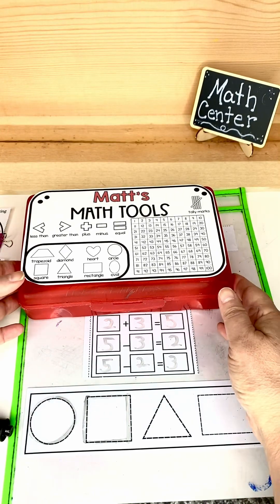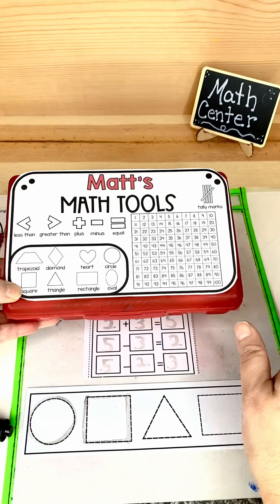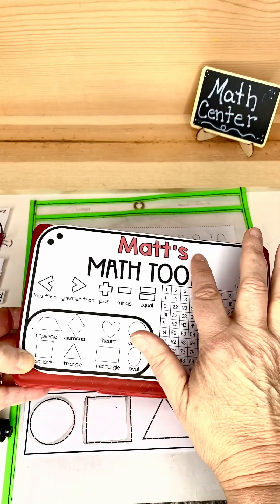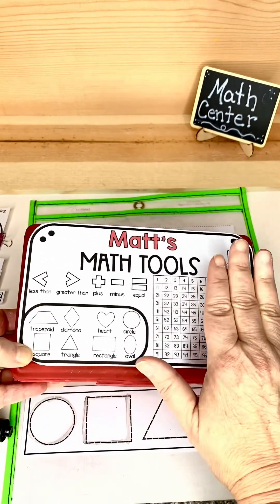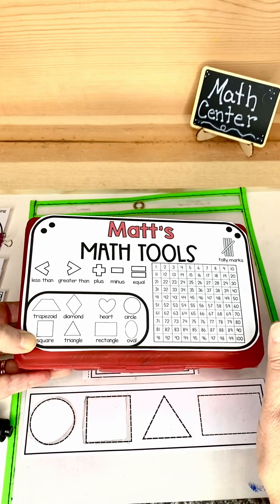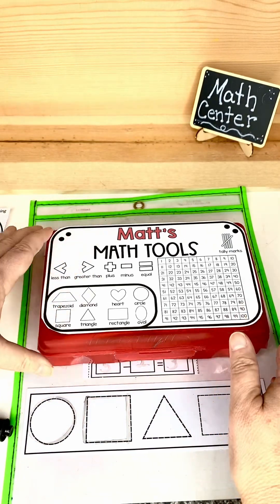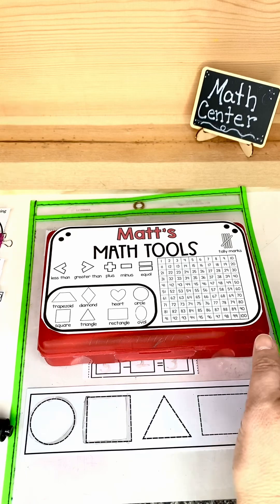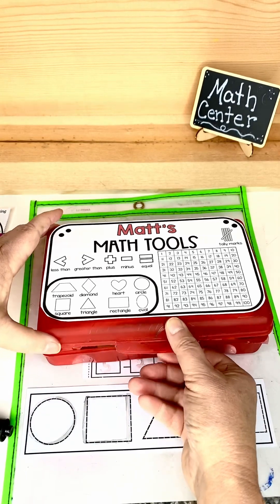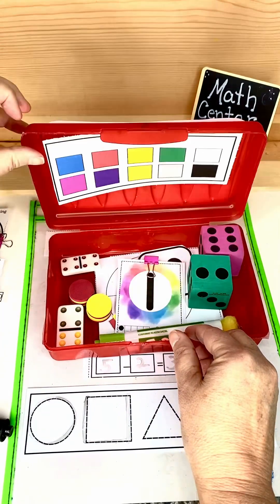Let me show everything that you can get in this math toolbox kit. You can personalize your student's name if you want to. If not, you can use the one that is not personalized. And this goes on top of a pencil box or you could put it inside of a ziplock bag. And inside you can keep your manipulatives.